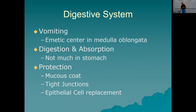Digestion and absorption: not much in the stomach. There's gastric lipase, so some digestion of lipids occurs in the stomach. No digestion of carbohydrates because salivary amylase has been denatured by the acid. There is some digestion of protein from pepsin. A little bit is absorbed, but not that much. One interesting thing: alcohol is absorbed by the stomach, which is why it's sometimes not a good idea to drink on an empty stomach — it gets absorbed quickly.